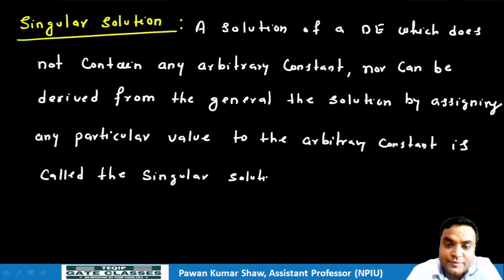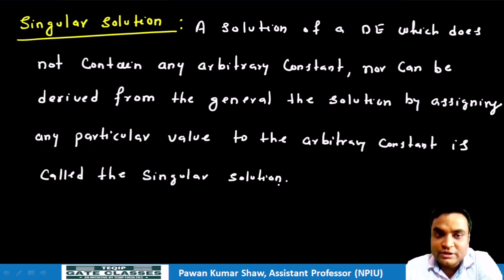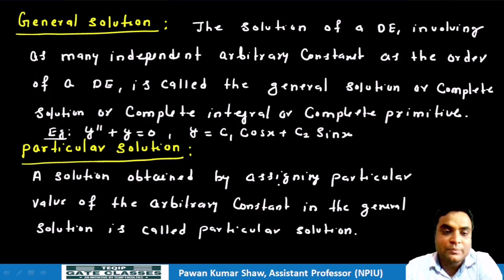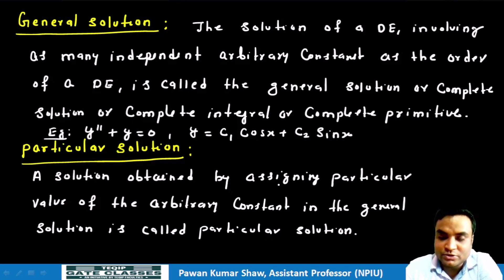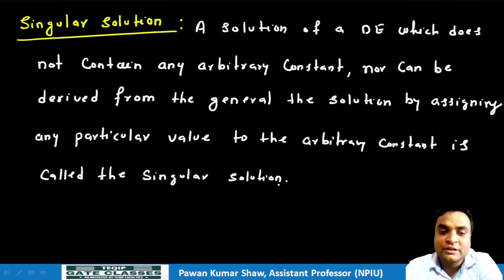To summarize the three types of solutions: general solution has as many arbitrary constants as the order of the differential equation; particular solution is derived from the general solution by assigning specific values to the arbitrary constants; singular solution contains no arbitrary constants and cannot be derived from the general solution.